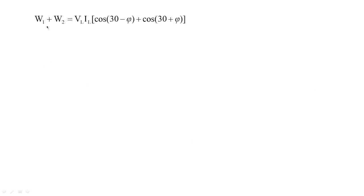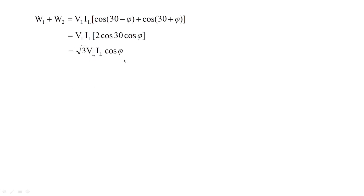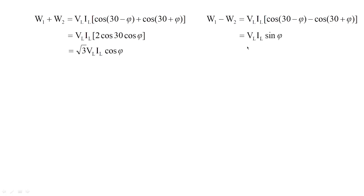To calculate total power, W1 and W2 are added. The sum W1 plus W2 equals VL · IL · [cos(30 − φ) + cos(30 + φ)]. Using the identity cos(A − B) + cos(A + B) = 2·cosA·cosB, this gives 2·cos30·cosφ, which equals √3 · VL · IL · cosφ. If we subtract W2 from W1, it gives VL · IL · [cos(A − B) − cos(A + B)], which equals VL · IL · sinφ.